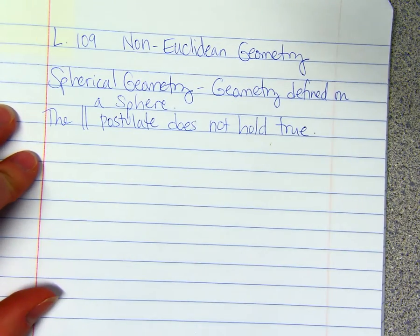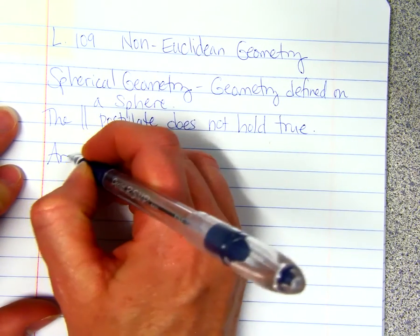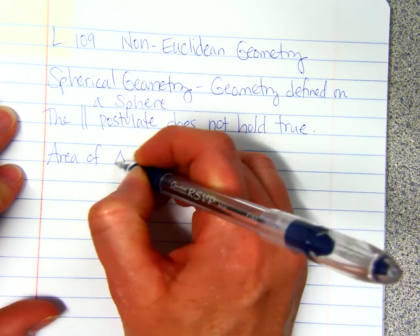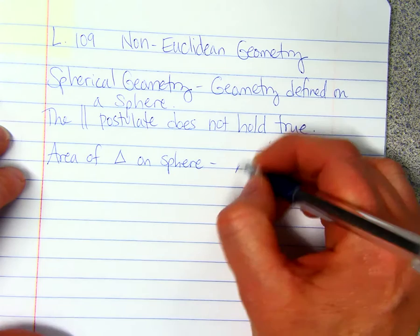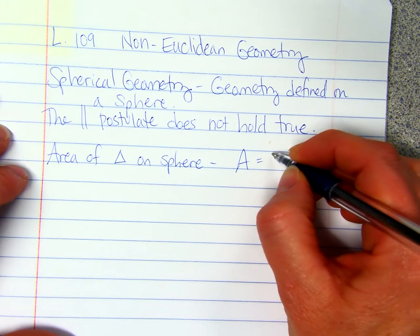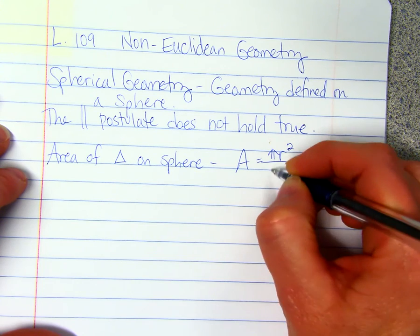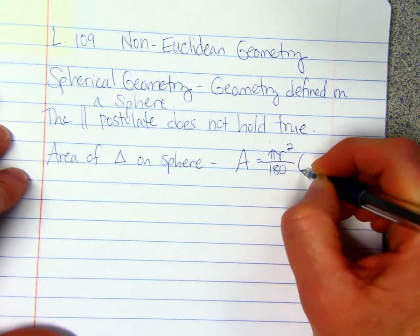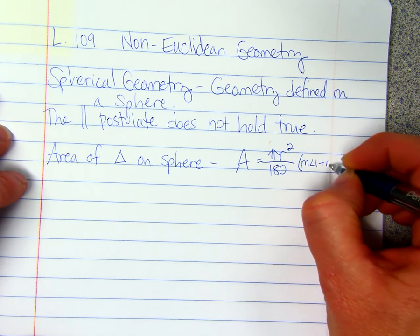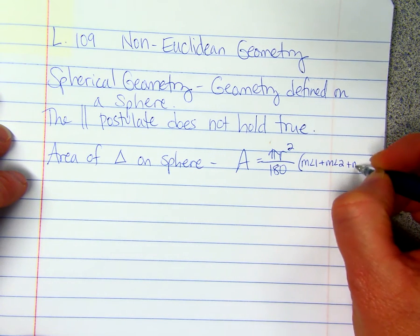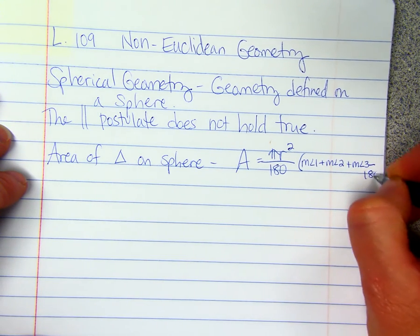To find the area of a triangle on a sphere, area of a triangle, it is equal to pi r squared divided by 180 times the measure of angle 1 plus the measure of angle 2 plus the measure of angle 3 minus 180.